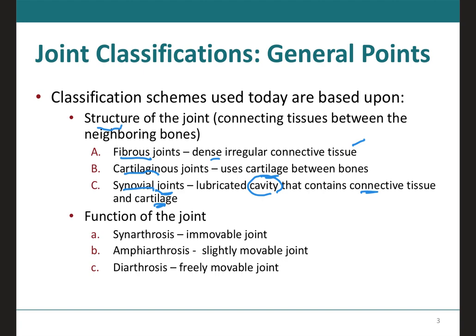With regards to the classification by function, we have three types as well: the synarthrosis, the amphiarthrosis, and the diarthrosis. 'Syn' reminds me of 'without' — in Portuguese, 'sem' means without — so synarthrosis refers to immovable joints, meaning without motion. Amphiarthrosis means slightly movable joints, and diarthrosis means freely movable joints. So now we have classifications according to structure and classifications according to function.